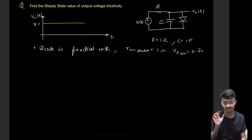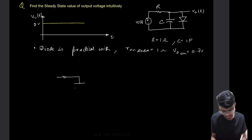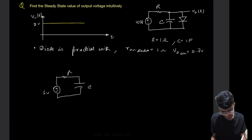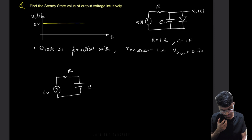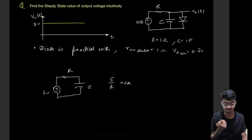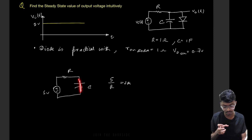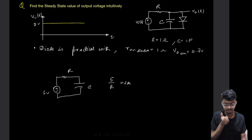What will happen is this voltage source will simply charge the capacitor like an RC circuit. The circuit becomes: 5V source, C, and R. Initially, the current is 5 divided by R, which is 5 amps since R is 1 ohm. The capacitor starts as a short circuit with zero voltage, and will slowly begin charging.